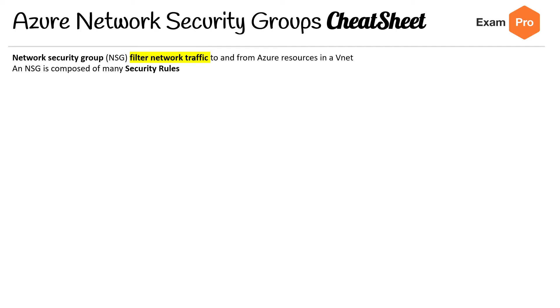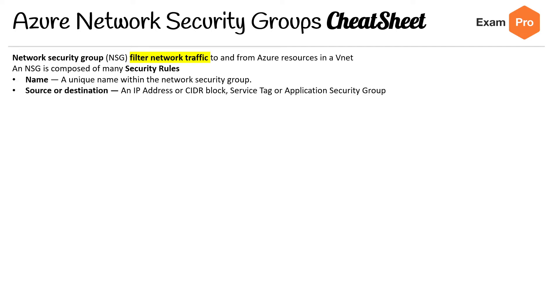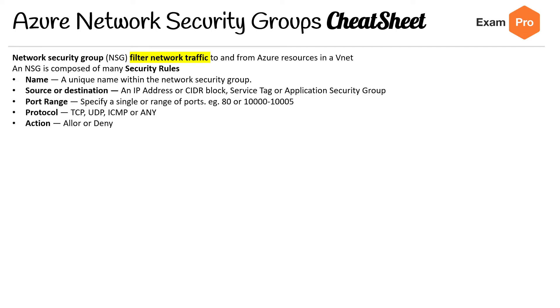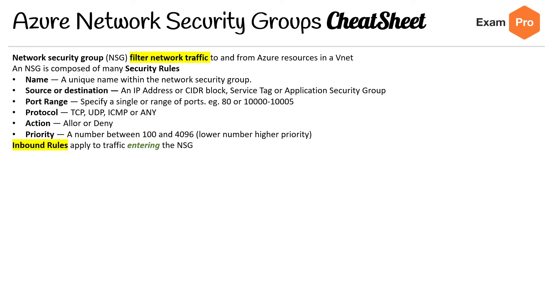An NSG is composed of many security rules. Each rule has a name, a source and destination, a port range, a protocol, and an action with a priority.